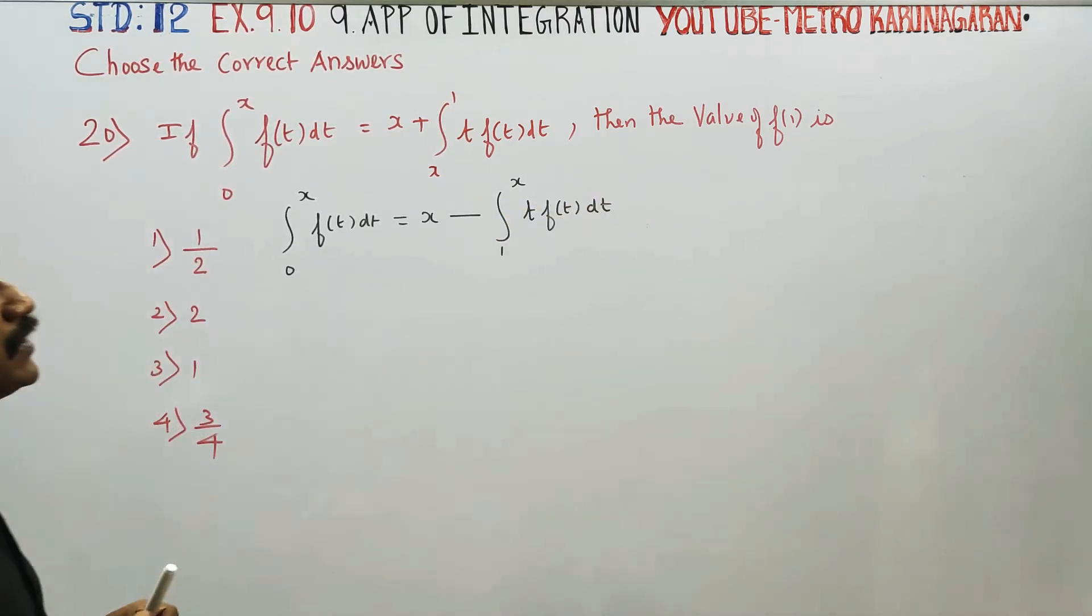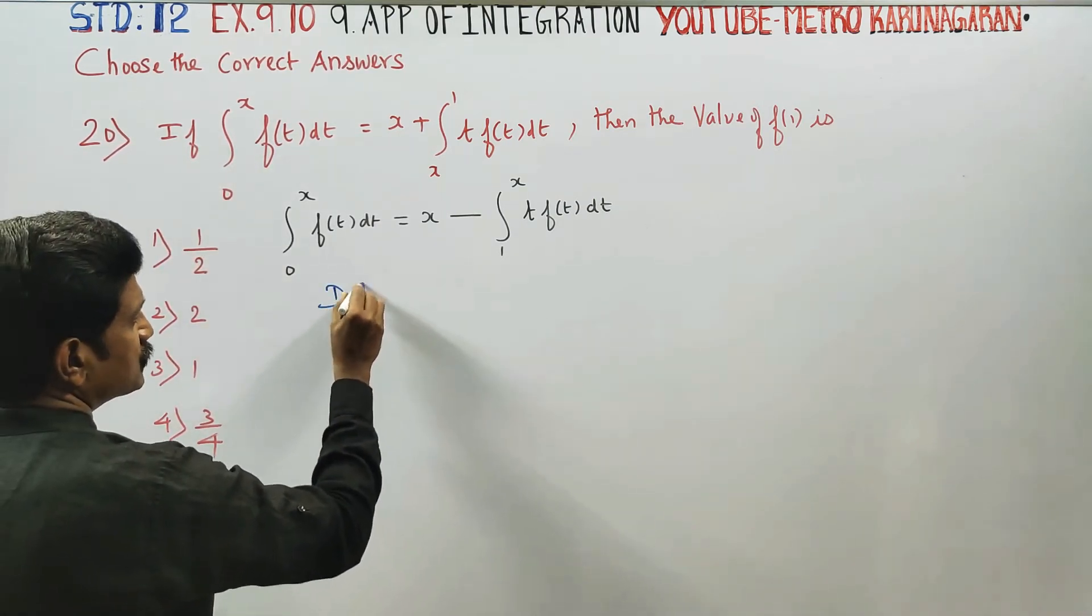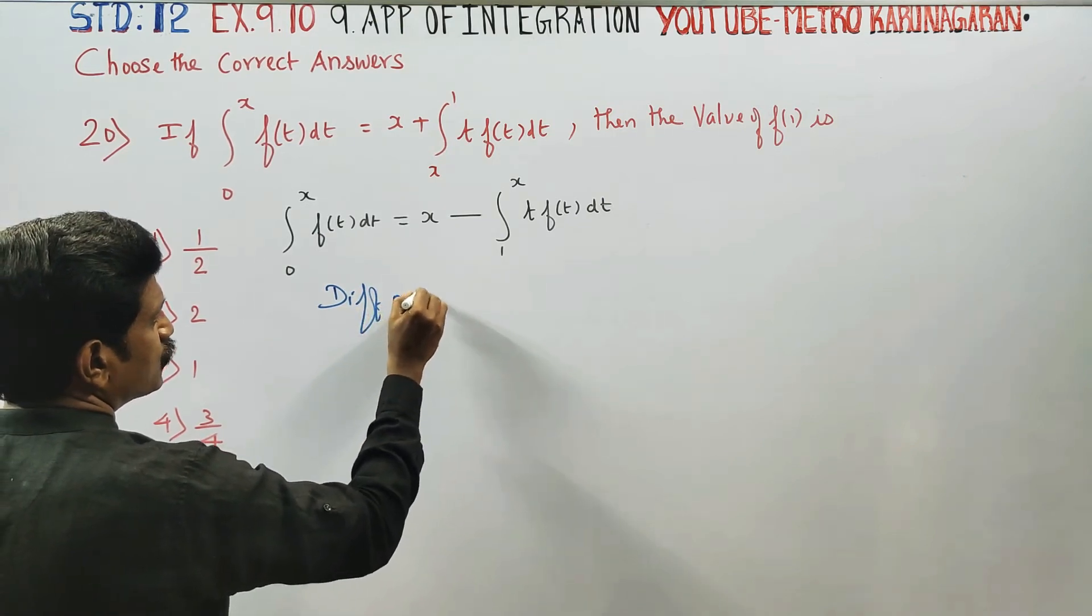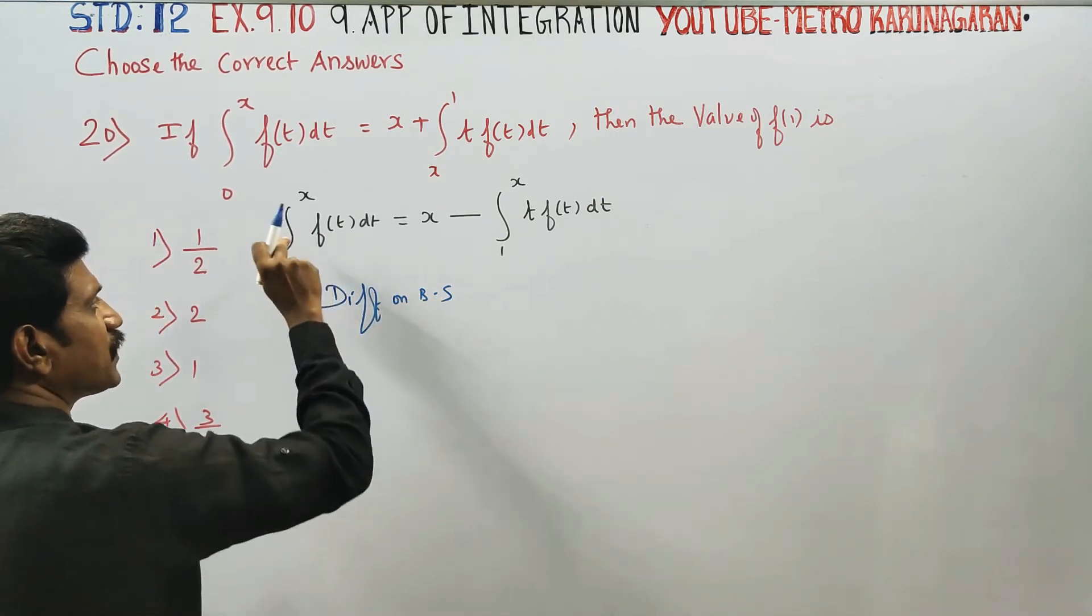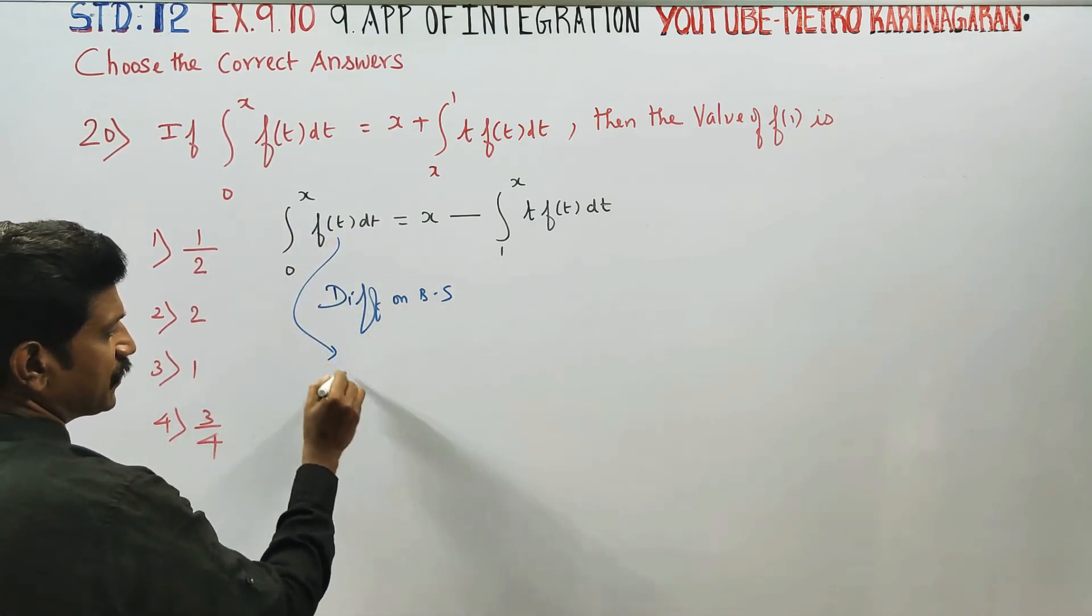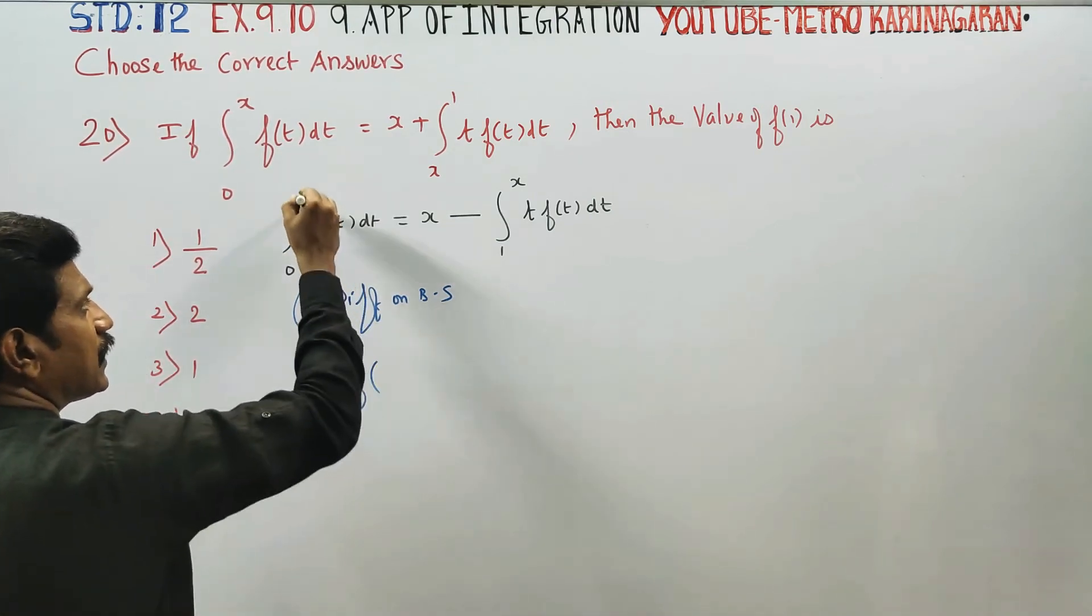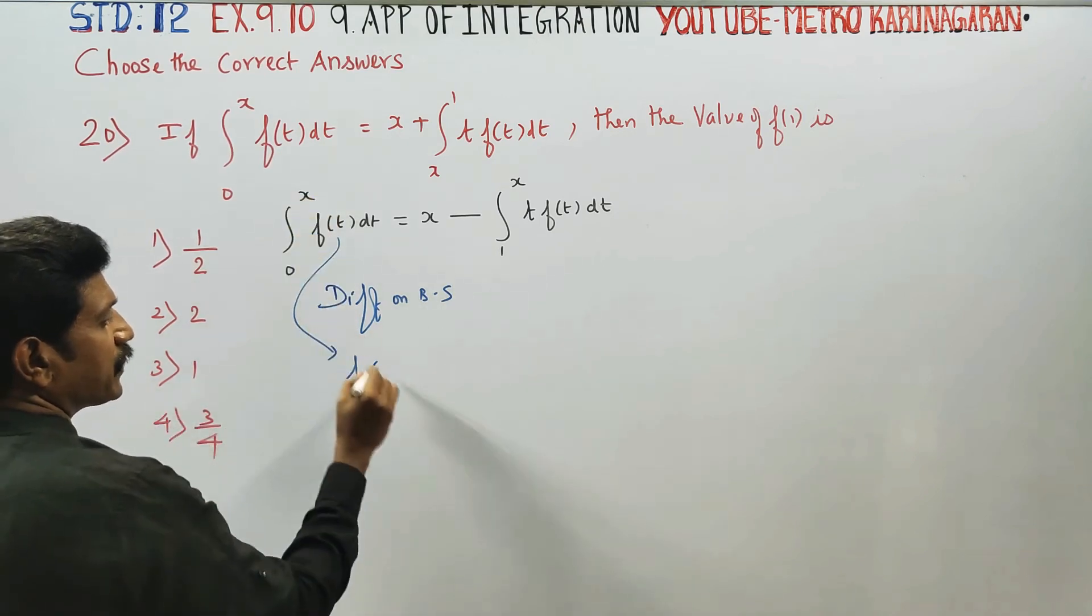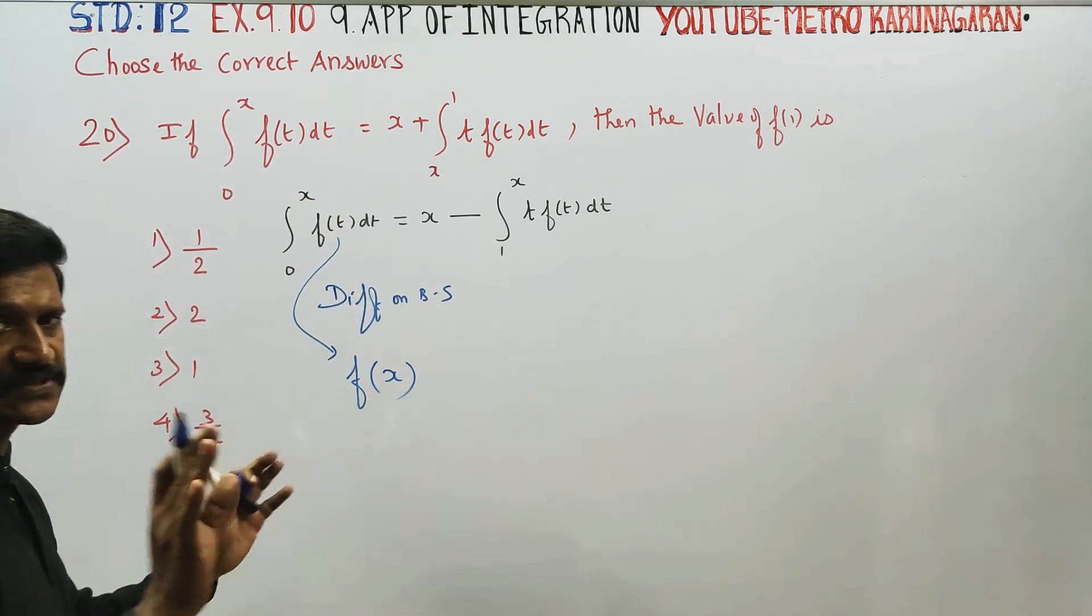Step number 1, you have to find the value of the integral. Just differentiate on both sides. Differentiation integration cancel. The function equals f of upper limit, and variable equals f(x). You have to find the value of f(x).